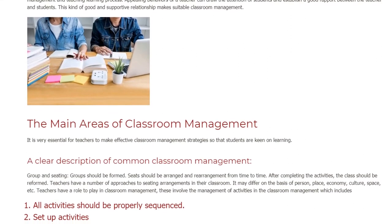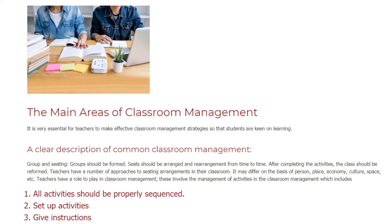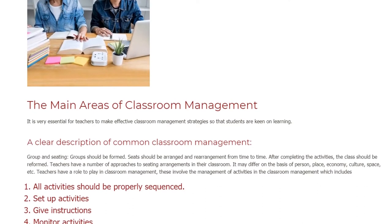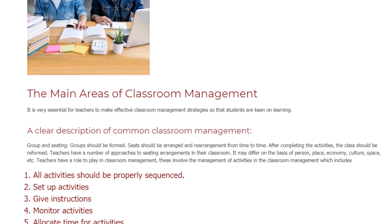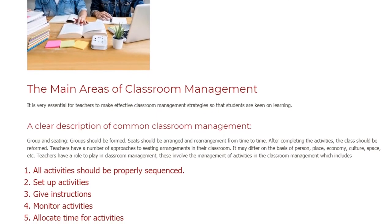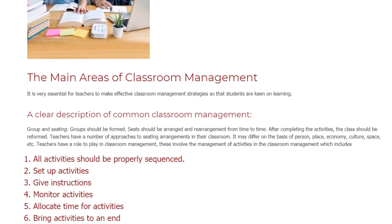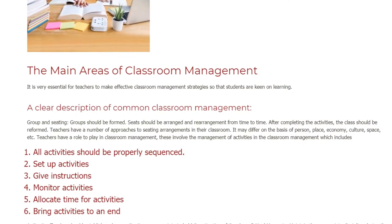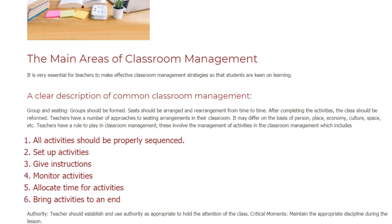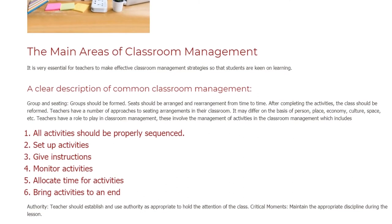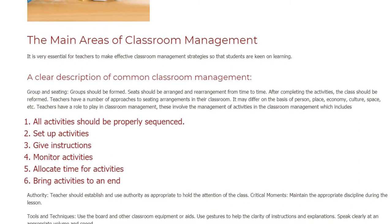The main areas of classroom management: It is very essential for teachers to make effective classroom management strategies so that students are keen on learning. Group and seating: Groups should be formed and seats should be arranged and rearranged from time to time. After completing the activities, the class should be reformed. Teachers have a number of approaches to seating arrangements in their classroom. It may differ on the basis of person, place, economy, culture, space, etc.